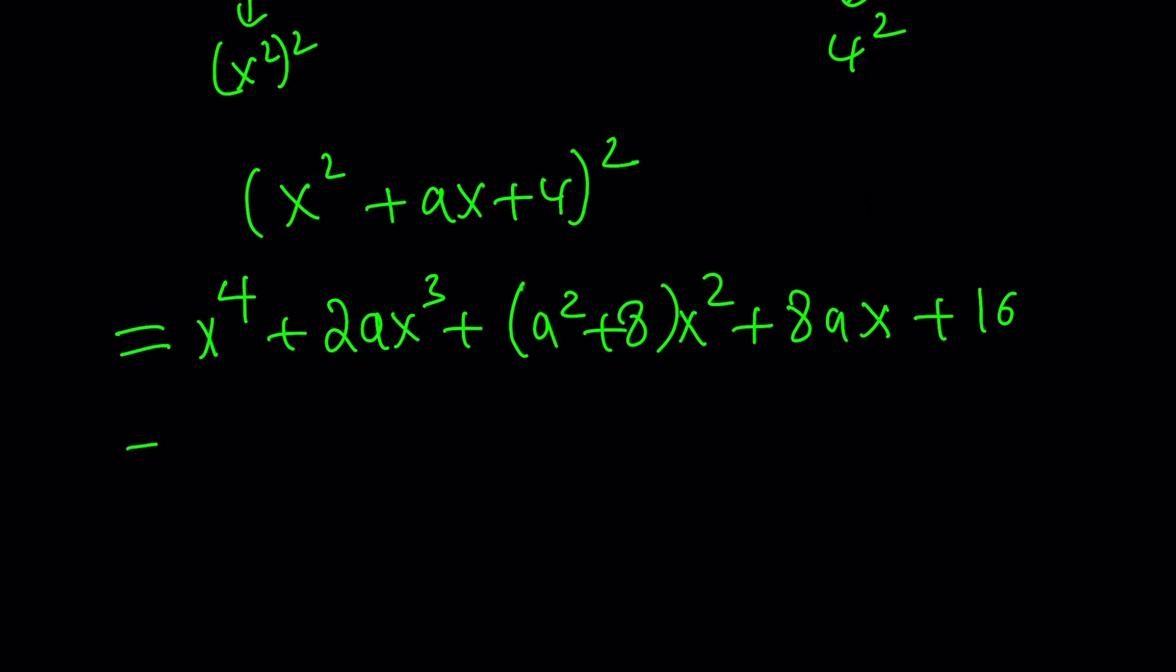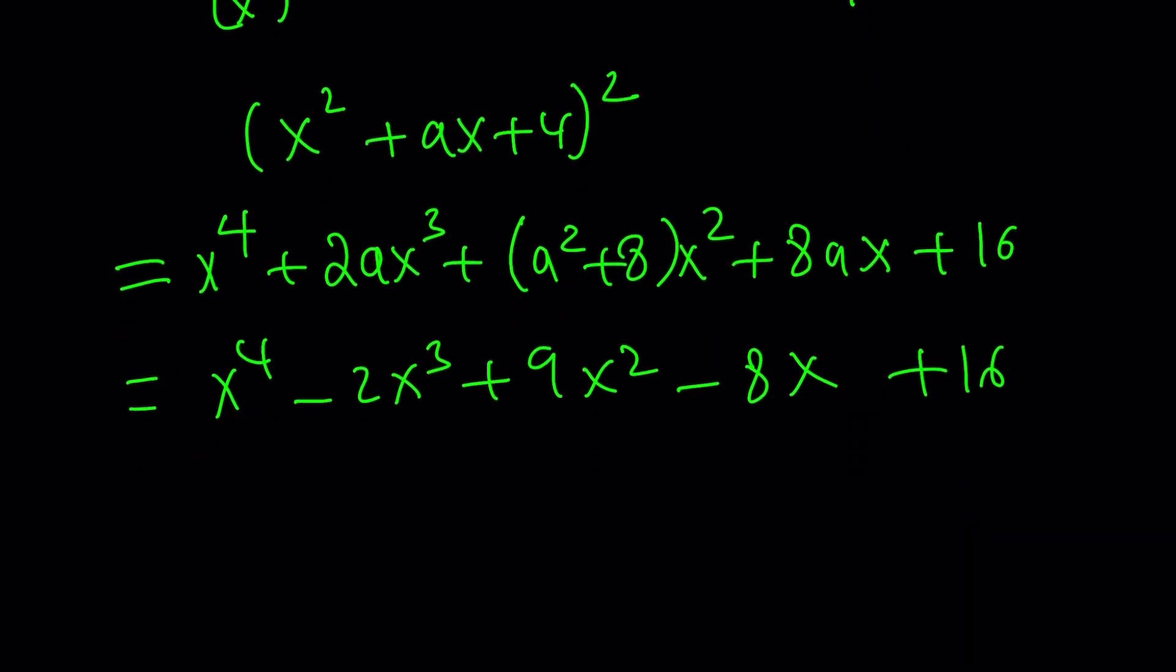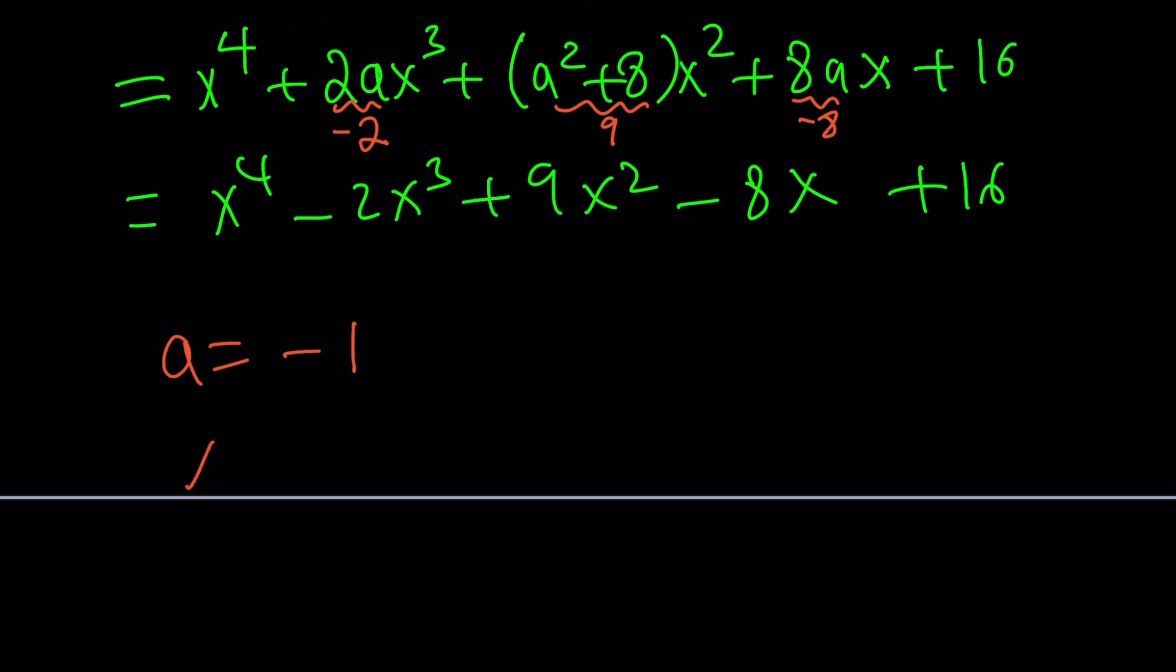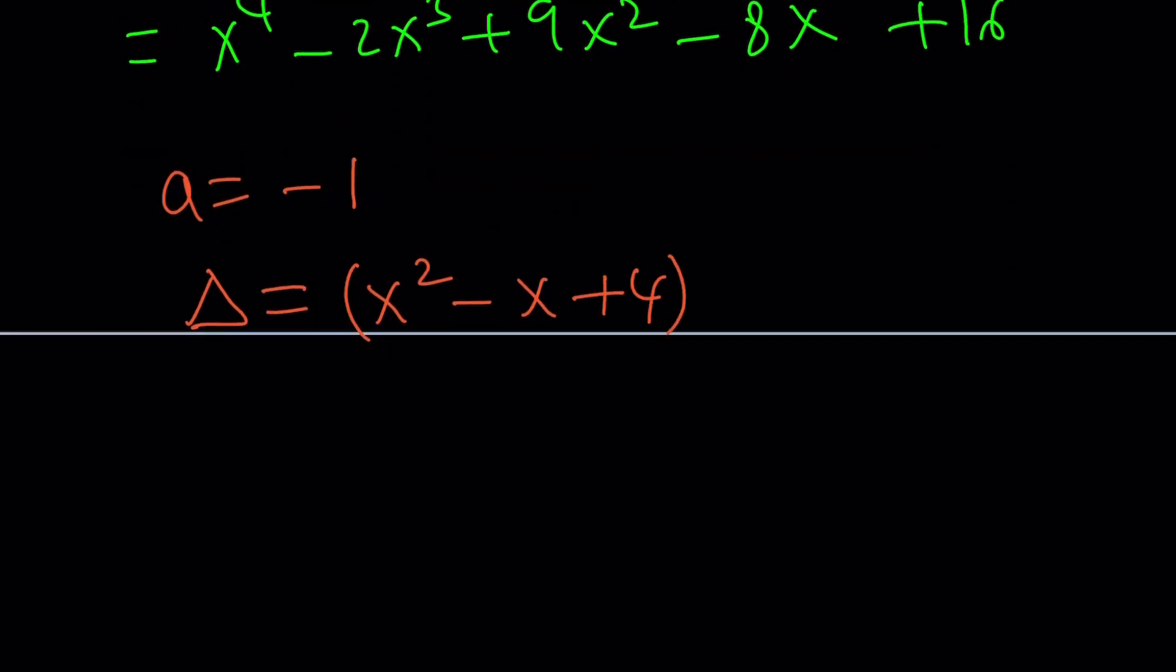We're supposed to set this equal to our discriminant, which is x⁴ - 2x³ + 9x² - 8x + 16. Well, quite a few things are matching up. Let's see how this works. Notice that the coefficient of x³ is 2a, which is supposed to be -2. This is supposed to be 9, this is supposed to be -8. Everything else checks out. So this means a is equal to -1, which means the discriminant is equal to (x² - x + 4)². This is our delta.